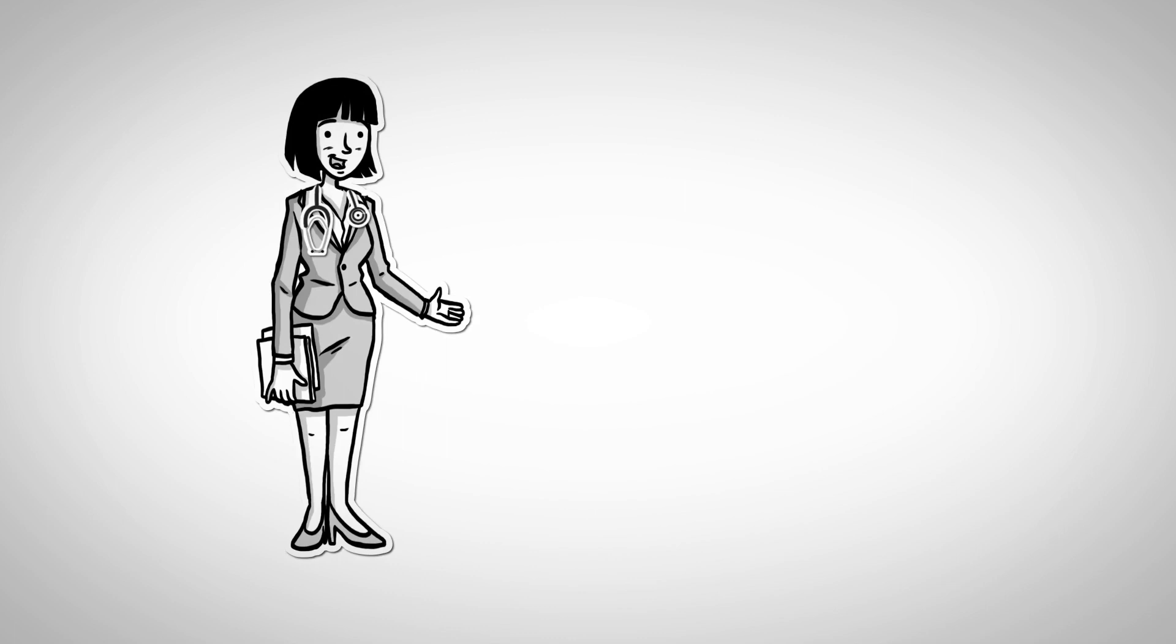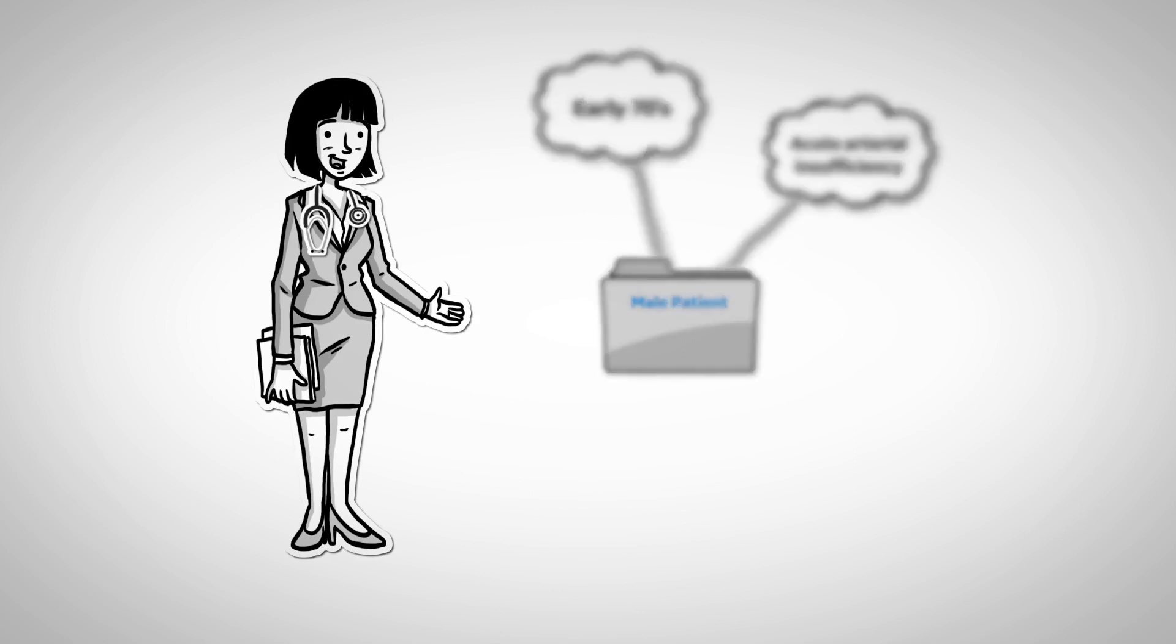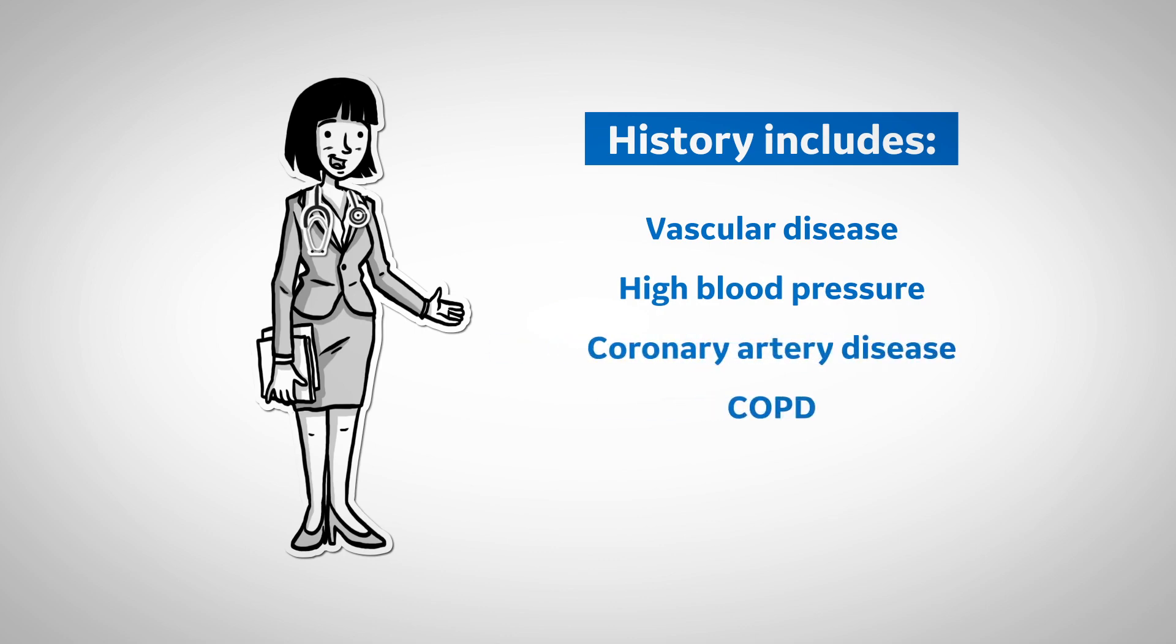The case we're going to look at involves a male patient in their early seventies with acute arterial insufficiency. This patient also had a history of peripheral vascular disease, hypertension, coronary artery disease, and chronic obstructive pulmonary disease.